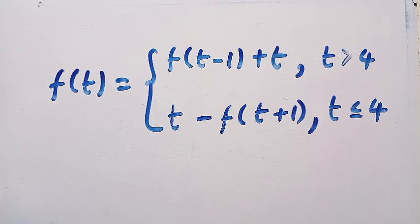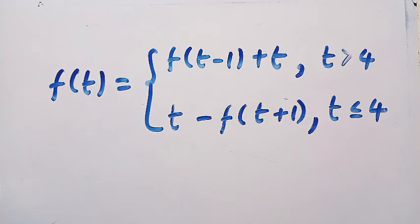We have a functional equation defined piecewise. We have some inequalities of greater than, less than, and equals to — we call this trichotomy, or piecewise functions. And we are interested to find f(5) plus f(6), given these conditions.